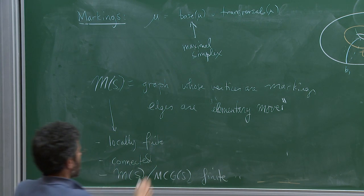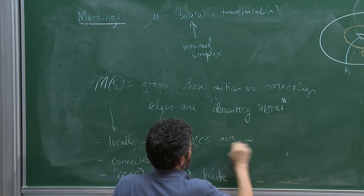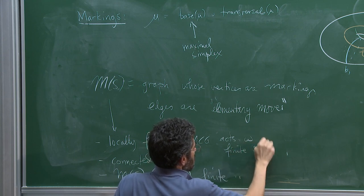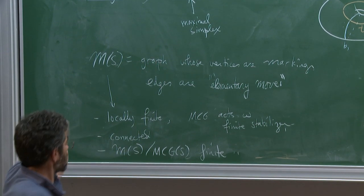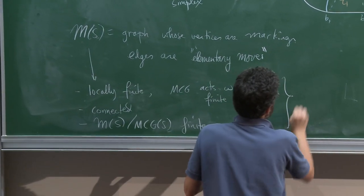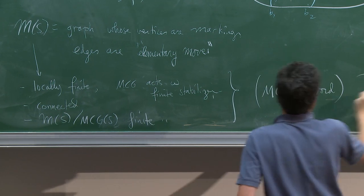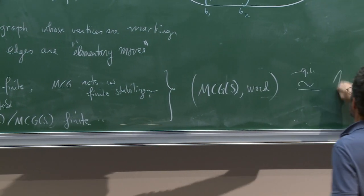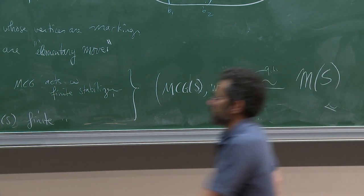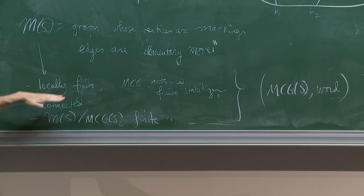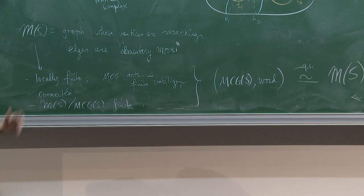The features I want from this: I want this to be locally finite — unlike the curve complex — I want it to be connected, and it's obviously acted on by the mapping class group. I want the quotient to be finite. The action has finite stabilizers, and MCG acts with finite stabilizers. All of this together implies that the mapping class group with its word metric on the Cayley graph is quasi-isometric to this thing. That's a general fact: as soon as you have this kind of action on a nice space — locally finite, finite stabilizers, connected with finite quotient — then the group and the space are quasi-isometric.